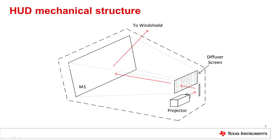Taking a closer look at the layout of an AR HUD, we see the projector and diffuser screen create an image which is reflected off the free-form mirror, here labeled M1, to the windshield and eye box. There is a large cavity created between the diffuser screen and mirror, which must be left open for the optical path. Overall volume in a HUD system is primarily affected by the size of the large free-form mirror — the larger this mirror is, the larger the optical cavity becomes.